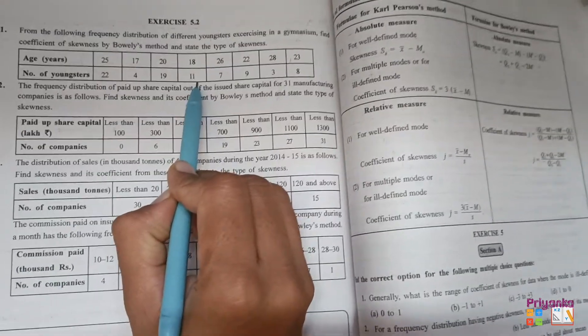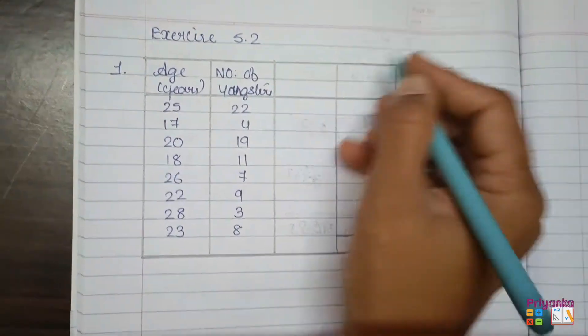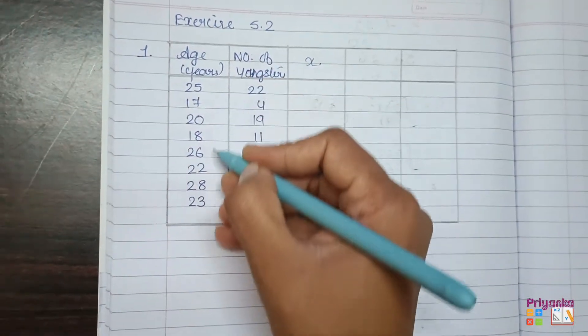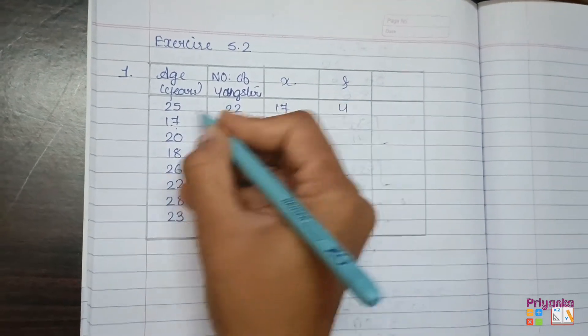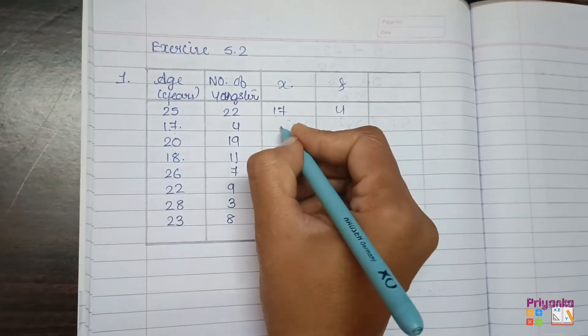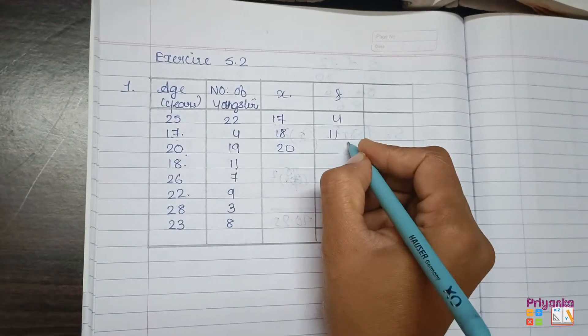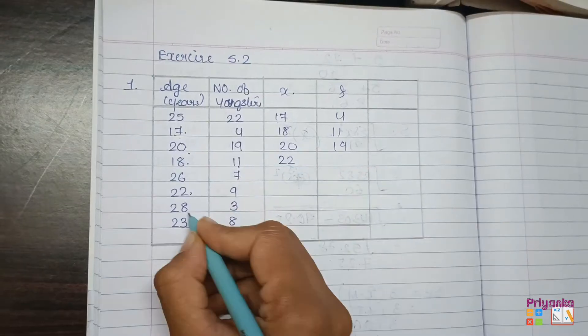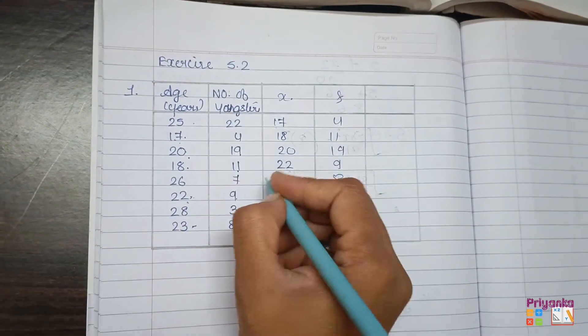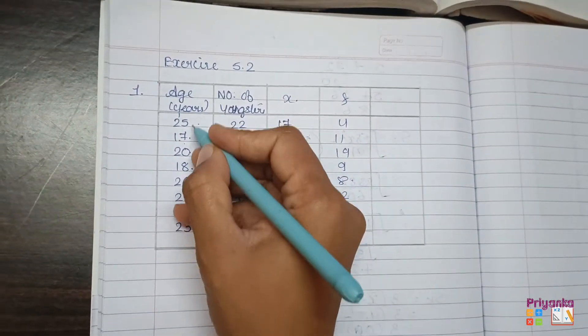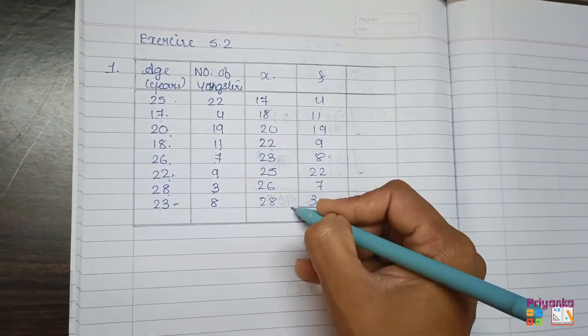That is somewhere 25, then 17, 20, 18, 26. So first of all, arrange the observation with frequency into the ascending column. First take the information in your book. Now here, first we'll find out the proper or the correct class observation, that is our x. First check with the smallest observation, that is 17 and the frequency is 4.